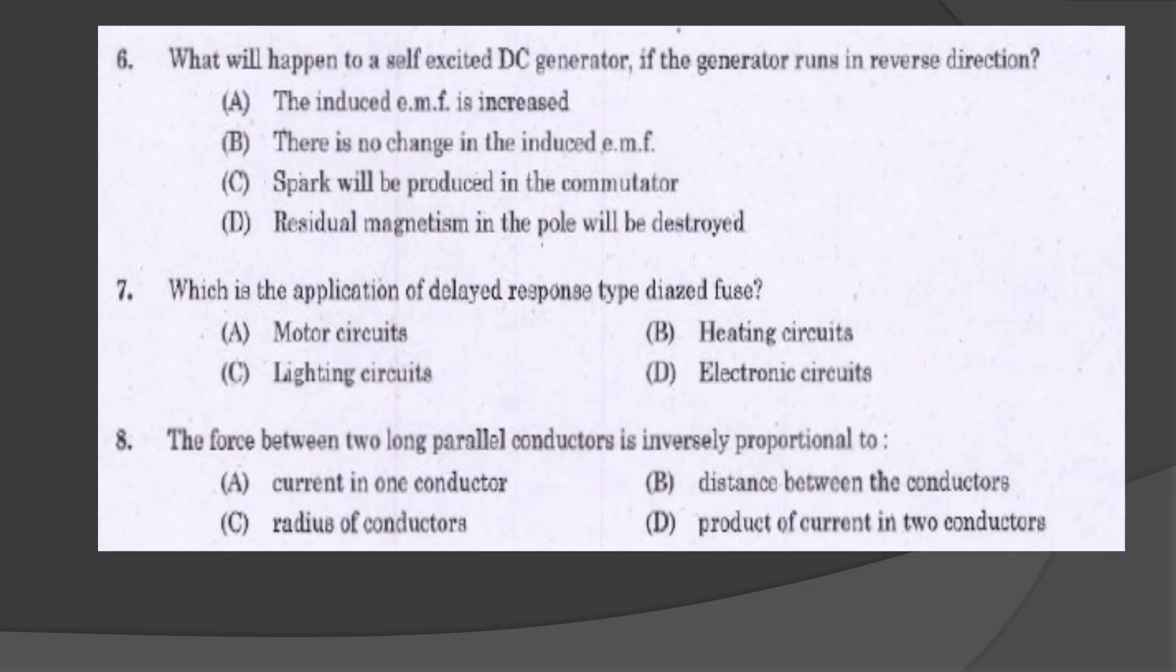What will happen to a self-excited DC generator if the generator runs in reverse direction? Residual magnetism in the pole will be destroyed.